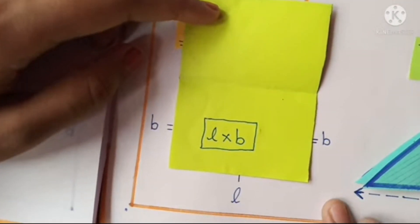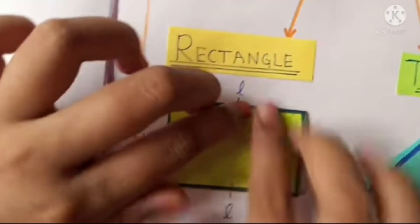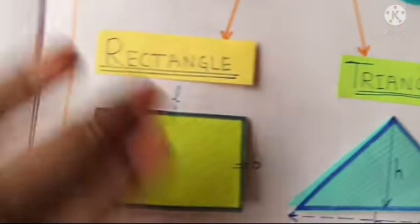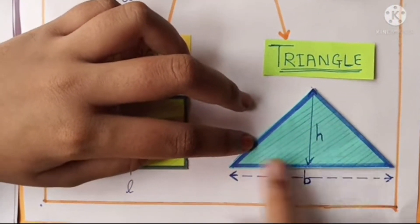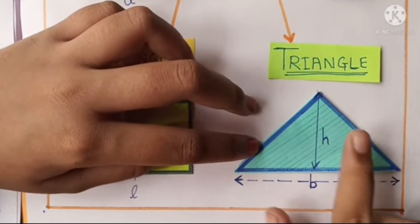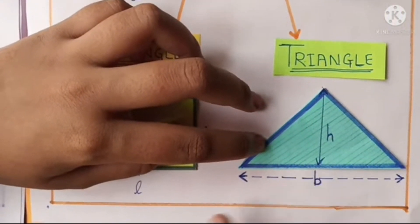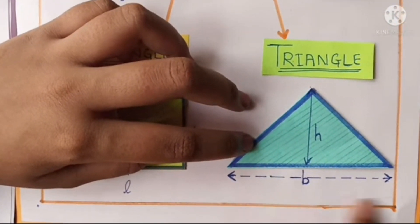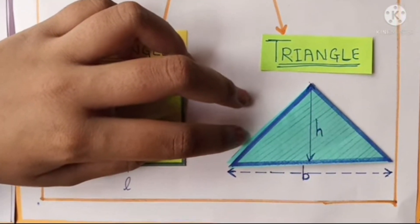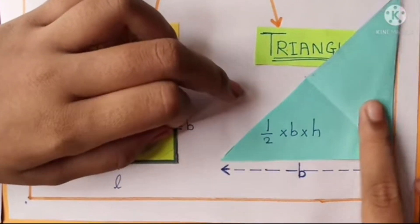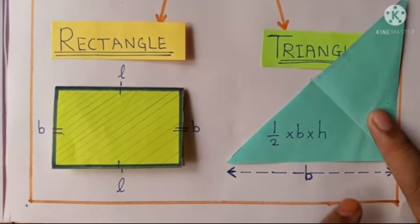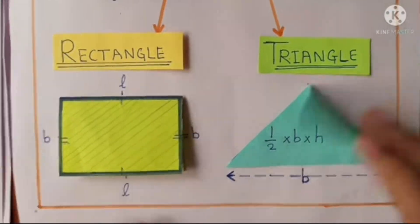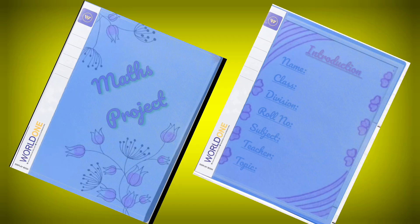Length into breadth. Let's see about triangle — here is the area of triangle. This is the height of triangle and this is the base of triangle. The formula is ½ × base × height. And here is the end.